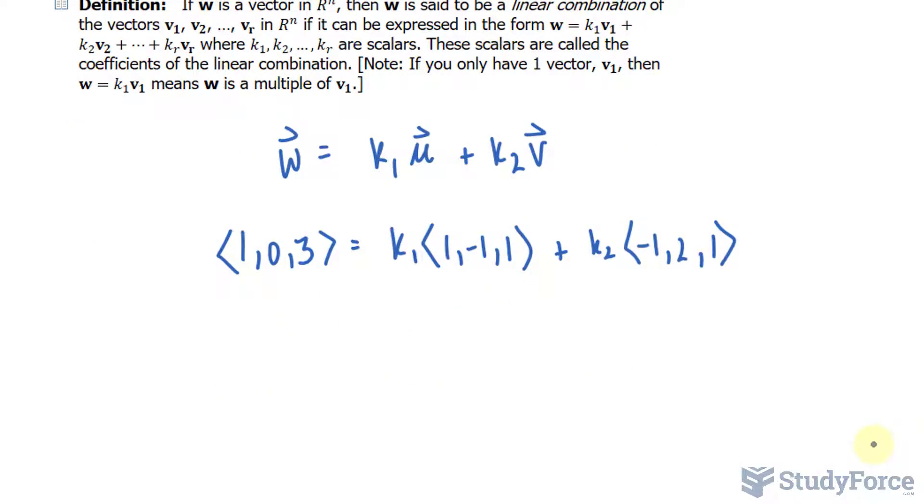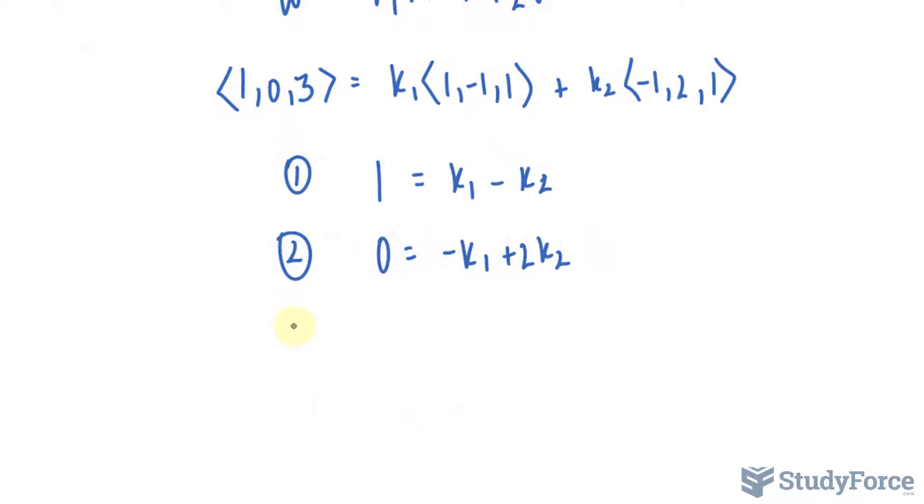Now if we equate the x, y, and z components, we should end up with three equations. Equation 1: 1 = k₁ - k₂. Equation 2: 0 = -k₁ + 2k₂. And the third equation: 3 = k₁ + k₂.